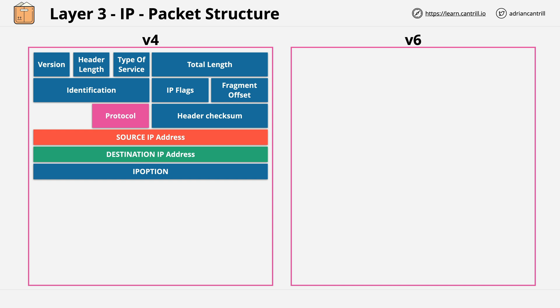It's this field which stores which protocol is used. Examples of protocols which this might reference are things like ICMP, TCP, or UDP.